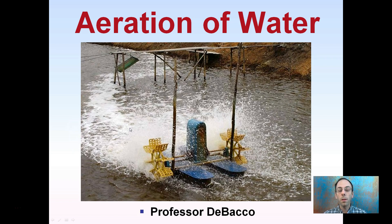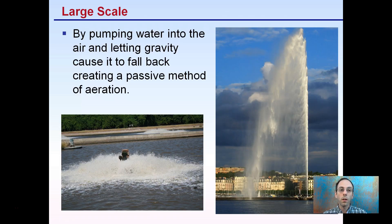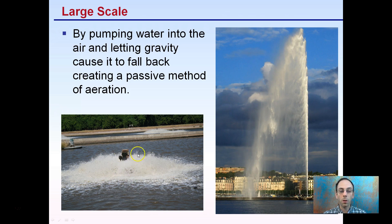There are some systems I'm going to describe which you may not be familiar with. First off, at a large scale, if we're pumping water into the air and letting gravity cause it to fall back, that creates a passive method of aeration. It could be a really strong pump getting really high, or just smaller pumps pumping it up and letting it fall back through gravity. This passive form of aeration can be very effective, and it's used a lot for display purposes in fountains to keep the water aerated in public areas such as parks.